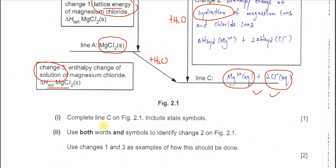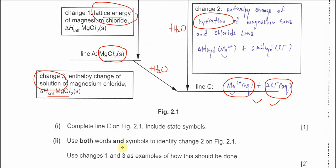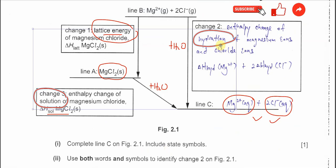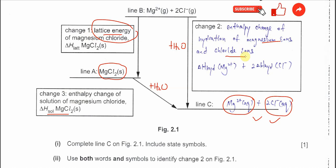Now next part: complete line C in Figure 2 — already done. Identify change 2 in Figure 2: this is the enthalpy change of hydration of the magnesium ion and the chloride ion. Remember, this equals the enthalpy change of hydration of Mg²⁺ plus two times the enthalpy change of hydration of Cl⁻, because there are two chloride ions.